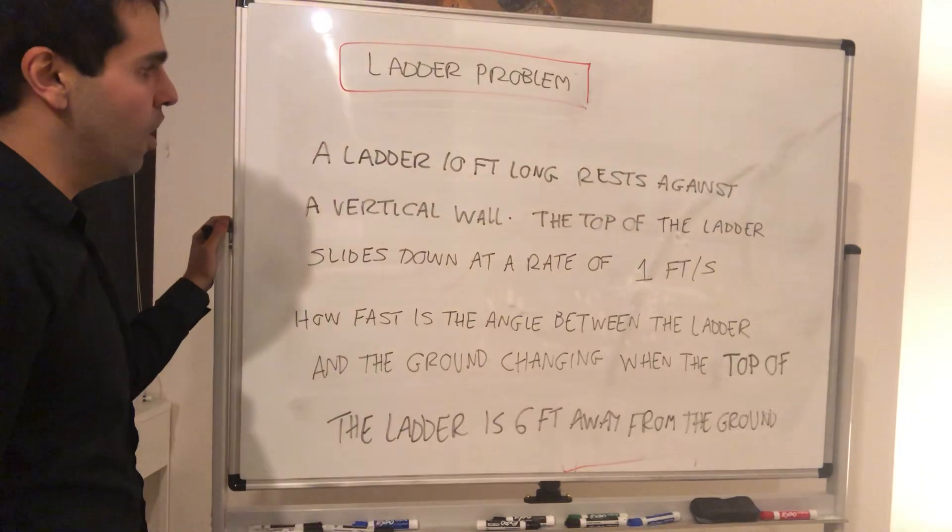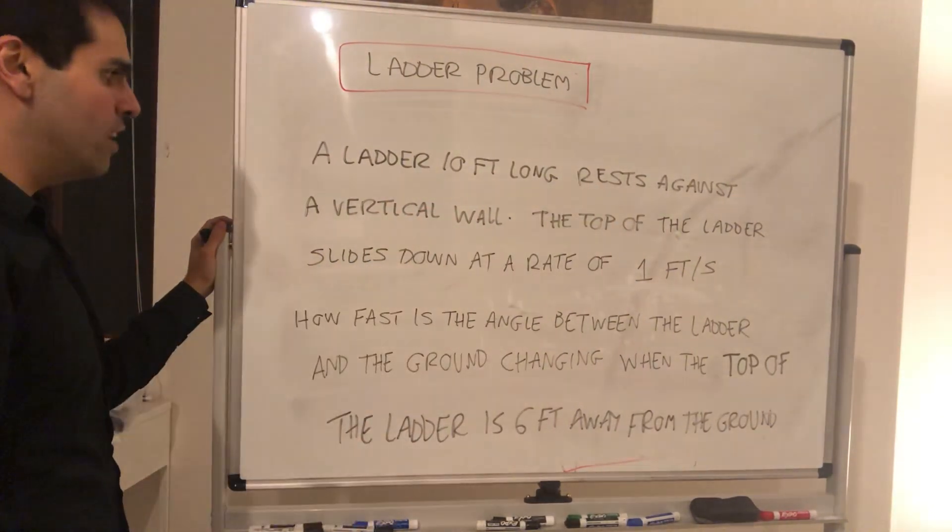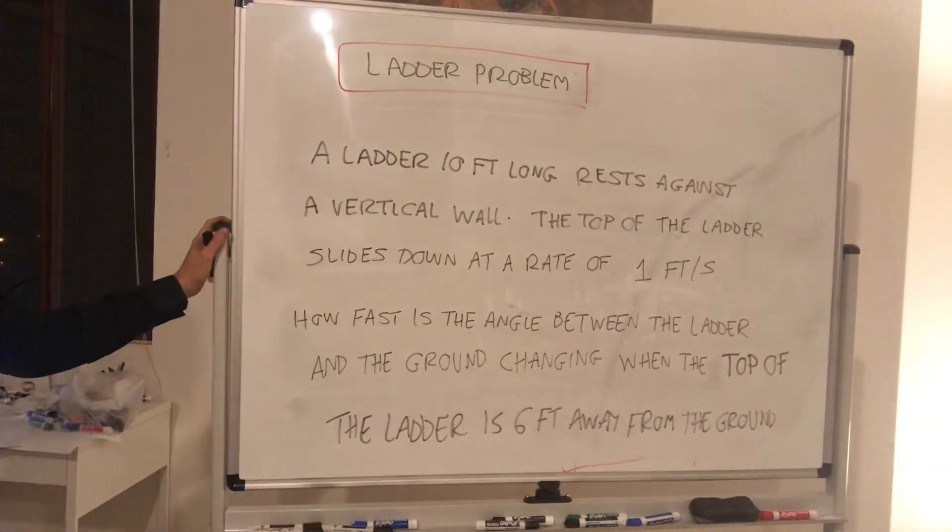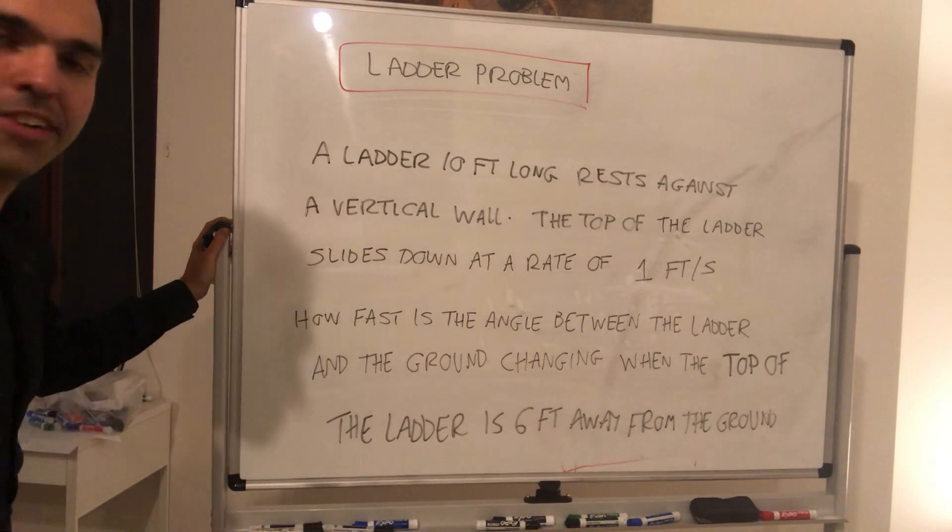So a ladder 10 feet long rests against a vertical wall. The top of the ladder slides down at the rate of one foot per second. How fast is the angle between the ladder and the ground changing when the top of the ladder is six feet away from the ground?